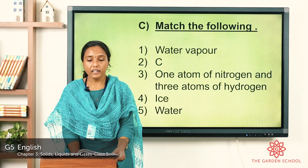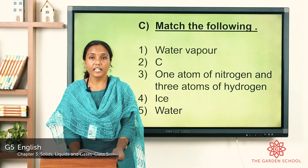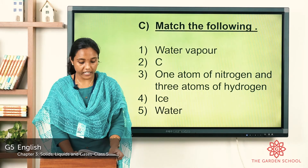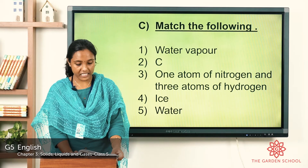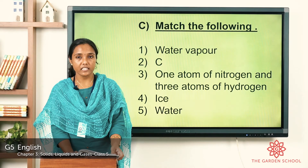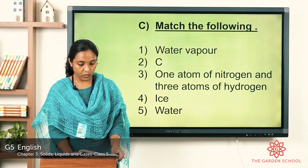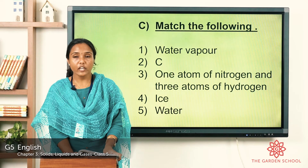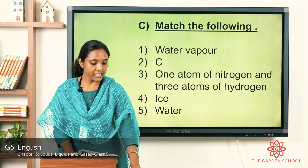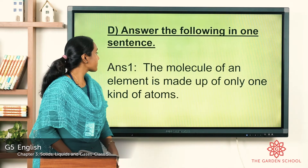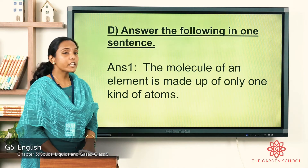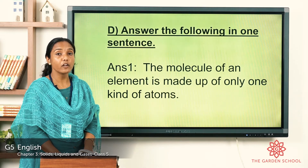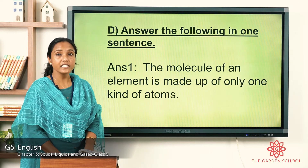Now let's see the fourth exercise — answer the following questions in one sentence. Children get ready with your notebook and pencil to write down the answers. First question: describe the molecule of an element. The molecule of an element is made up of only one kind of atoms, that is elements.